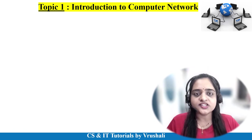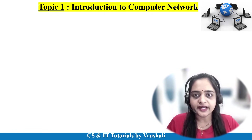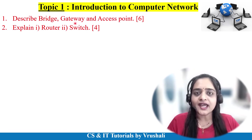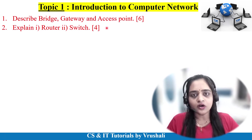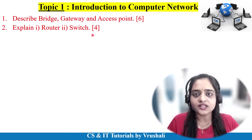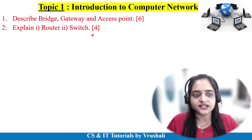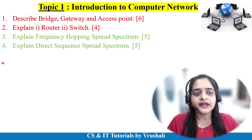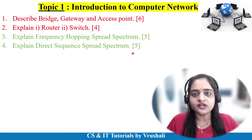The first unit is introduction to computer networks. The most important topic here is network devices — questions like describe bridge, gateway and access point, or explain router and switch. Prepare explanations of all network devices with simple examples for 4 to 6 marks. Next questions ask you to explain frequency hopping spread spectrum or direct sequence spread spectrum for 5 marks.